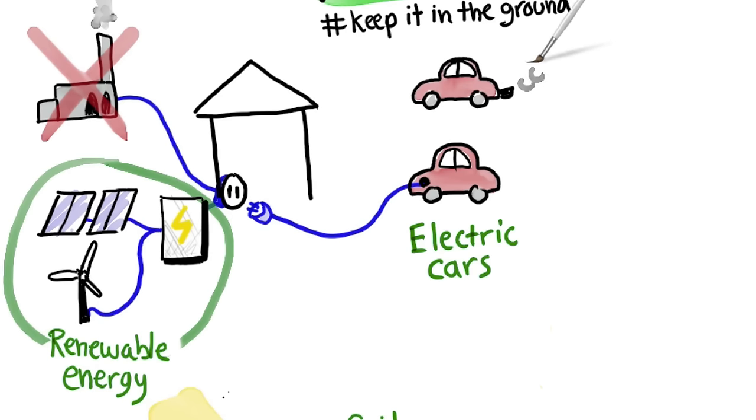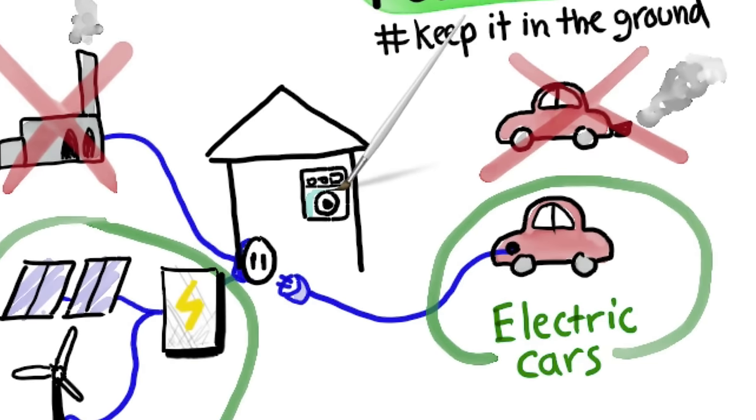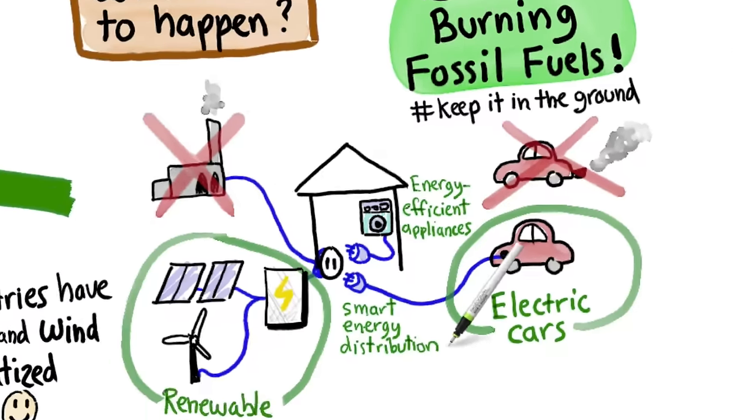Of course, an electric car is only as clean as the electricity it uses, but the difference is that a fuel car will stay dirty forever, while an electric car gets cleaner automatically as the power grid gets cleaner.